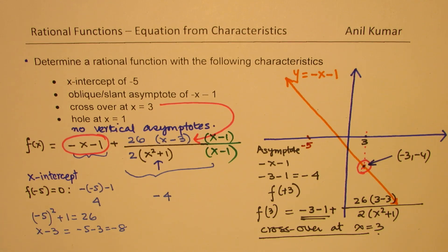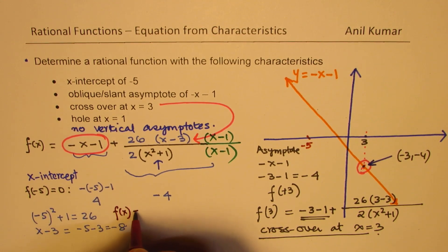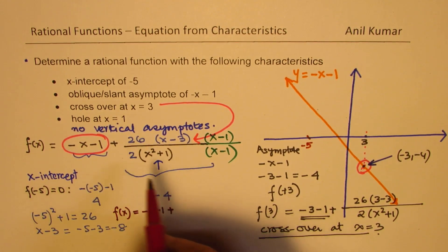So we get our equation which satisfies the given conditions. So finally, our equation is f of x equals minus x minus 1 plus,